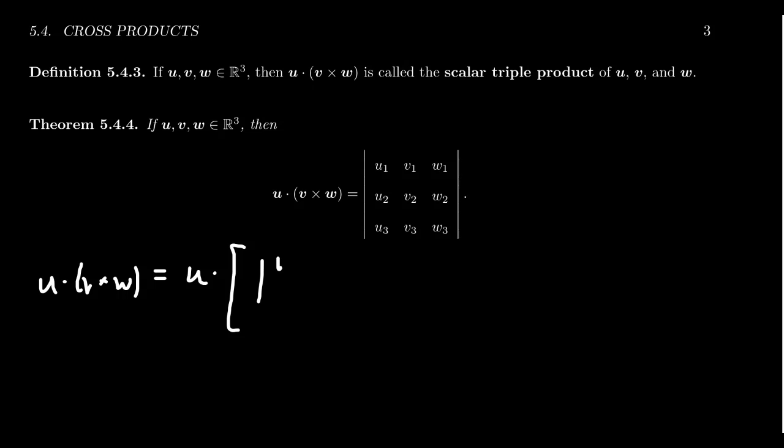We're going to get v2 w2, v3 w3, that's the first entry. Then you're going to subtract from that, the second entry should be v1 w1, v3 w3 like so. And then finally you're going to get your third determinant there: v1 w1, v2 w2.